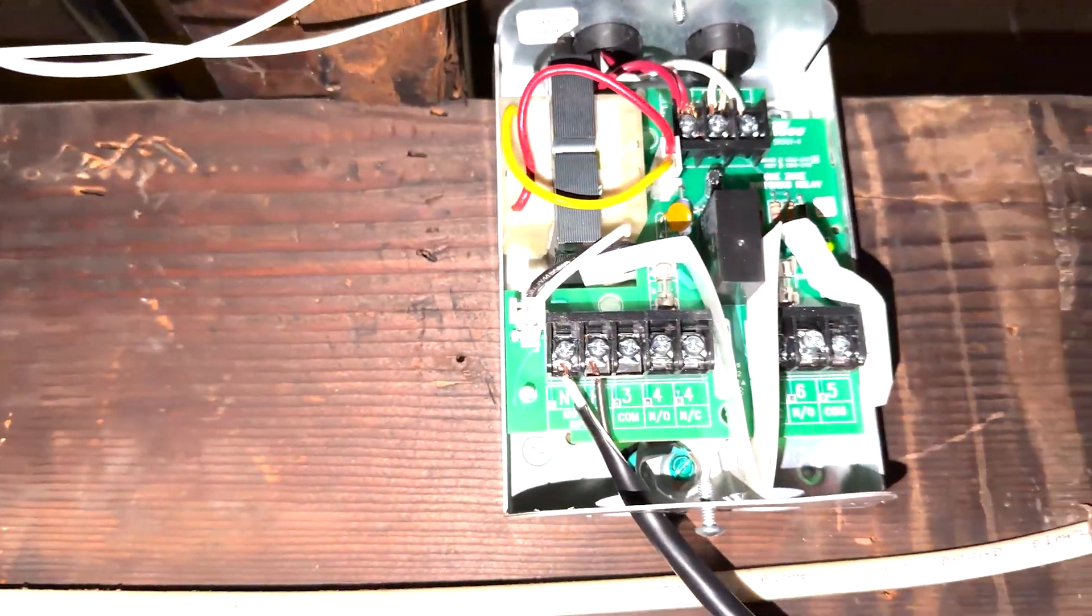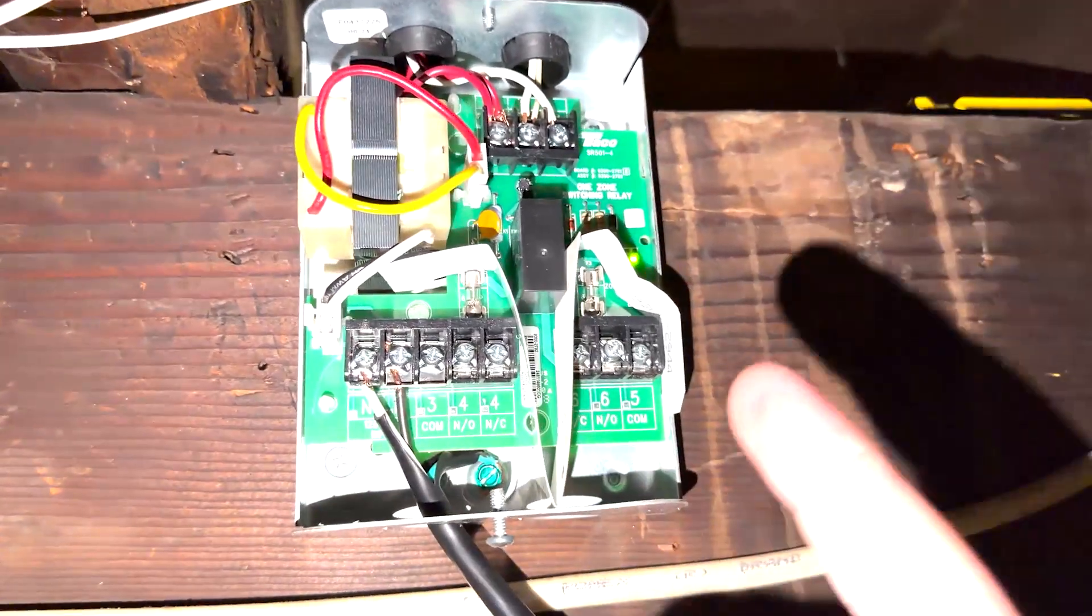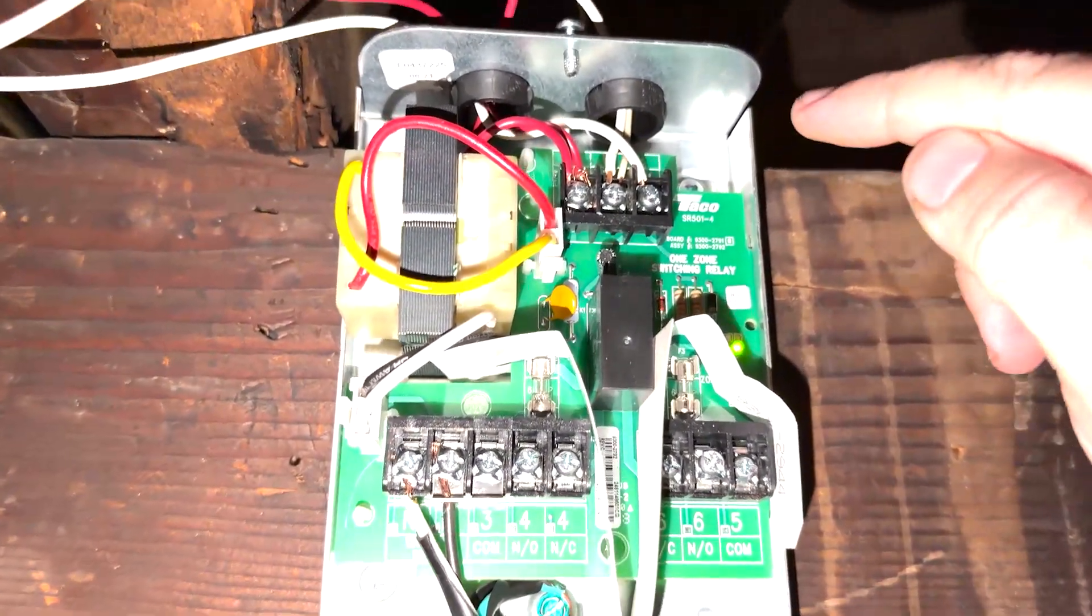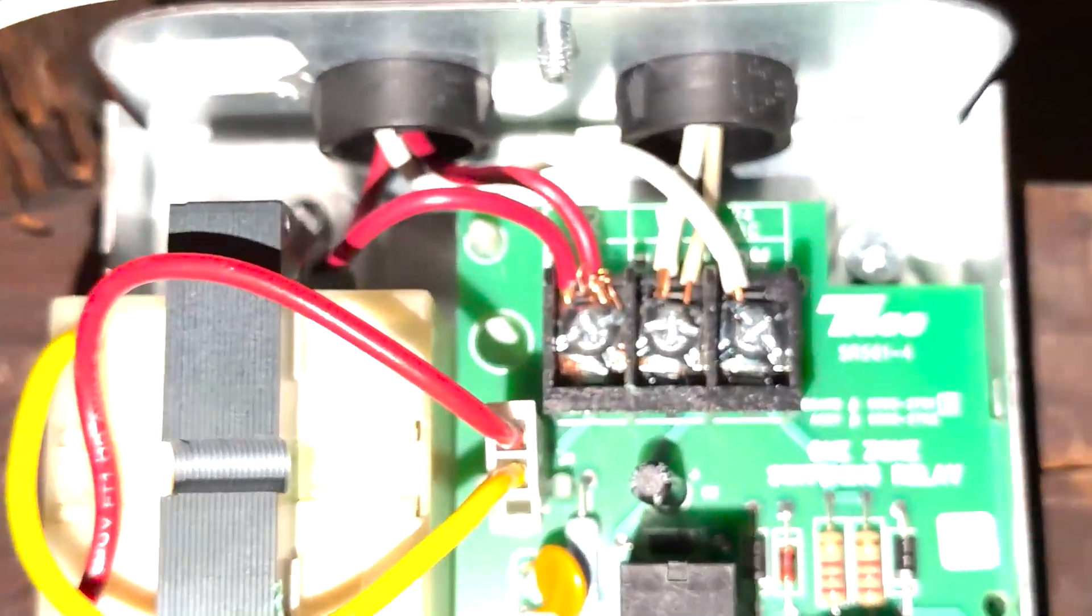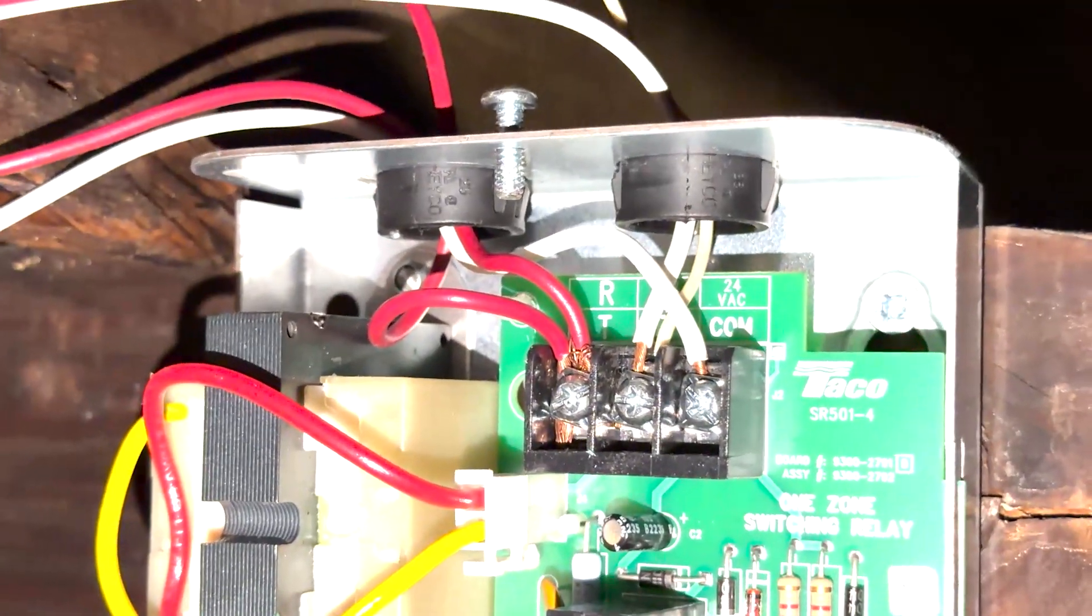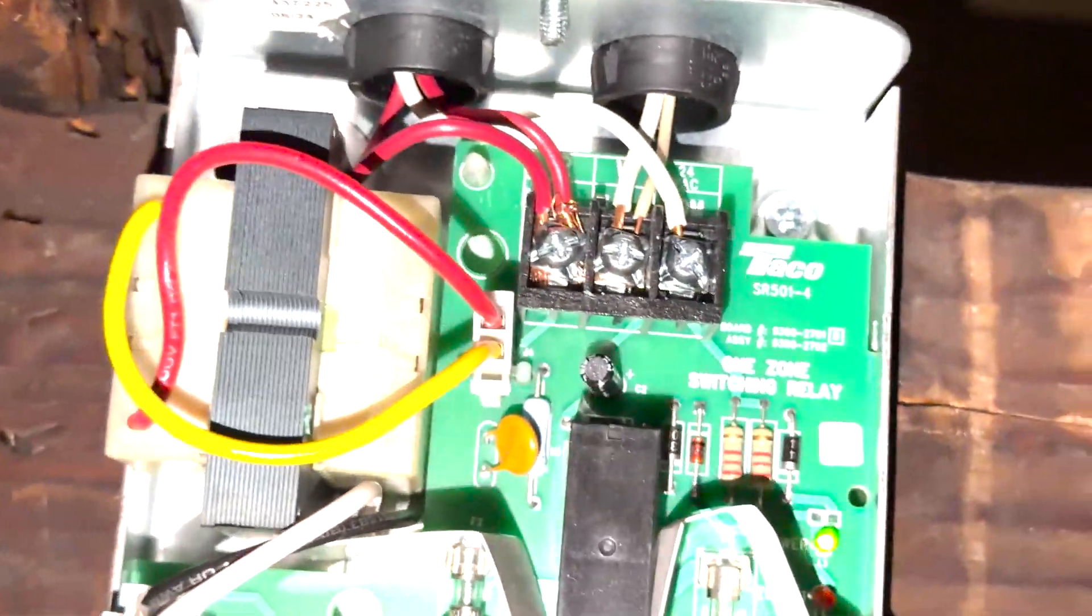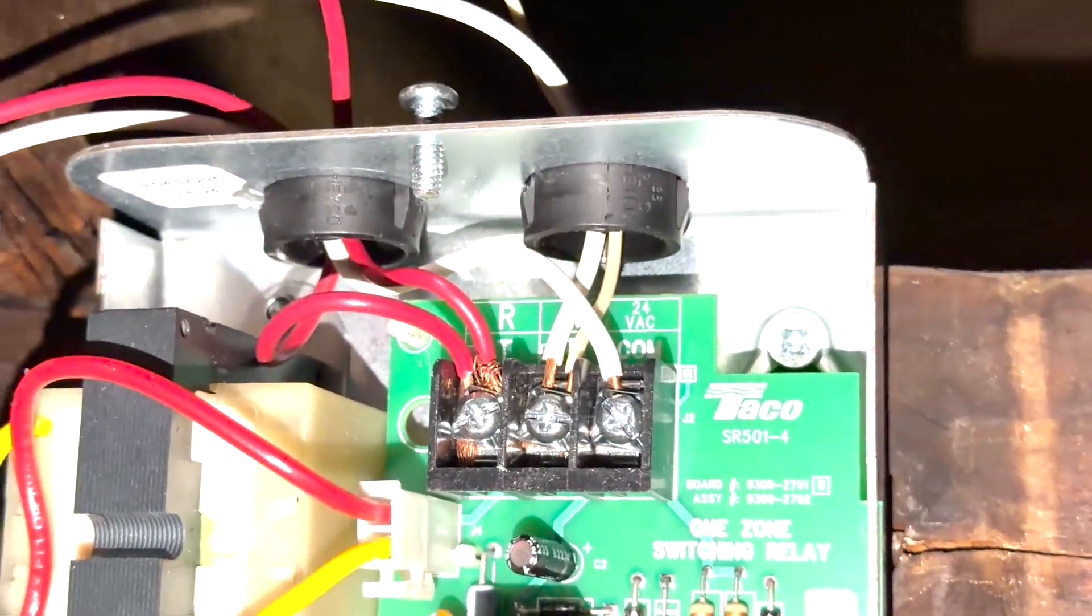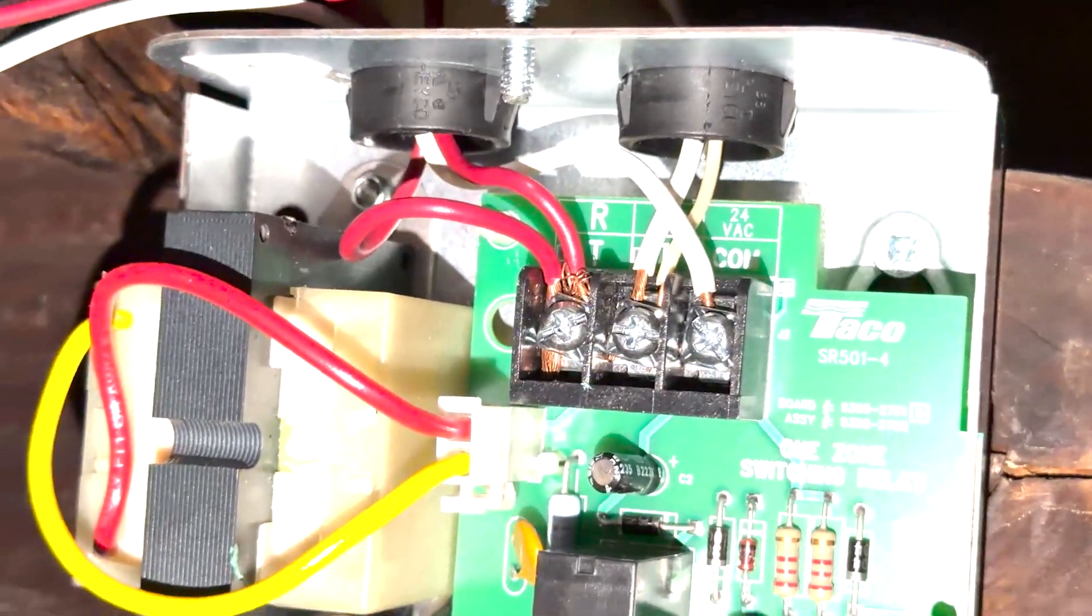So basically what you have to do is you have to take that zone relay and connect the 24-volt transformer to these terminals here. And as you'll see, they're labeled red T, WT, and 24-volt common as well on the end.